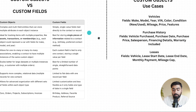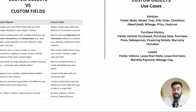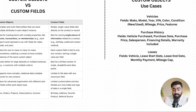For example, if you create an object called 'purchase history' for a car dealership with custom fields like vehicle purchased, purchase date, purchase price, and salesperson — when Mark comes in and buys a Toyota Camry, he'll be linked to that record. A year later, when he buys another car, he'll be listed as owner of that one too. If you go into Mark's contact, you can see both cars he's bought over the year. That is exactly what custom objects unlock and custom fields cannot.